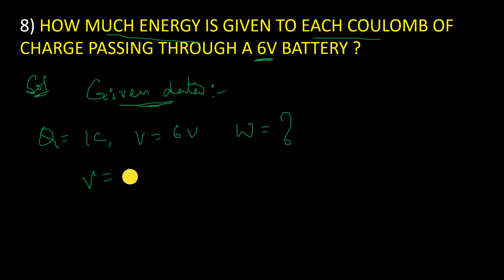So we know the formula V equal to W by Q. Potential difference is nothing but work done to bring unit positive charge from one point to another point. So from this we can take W equal to VQ.